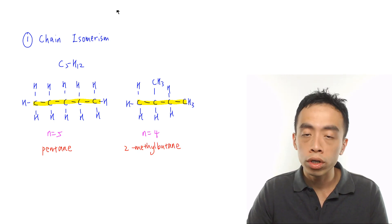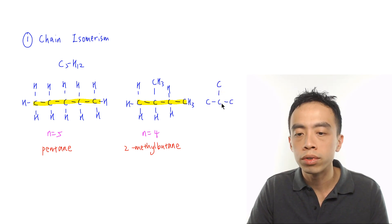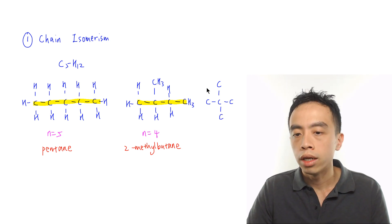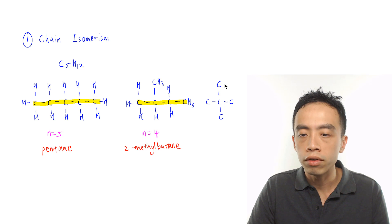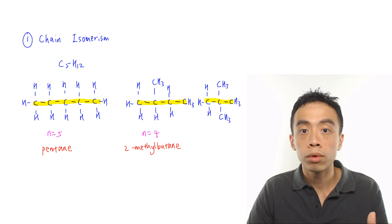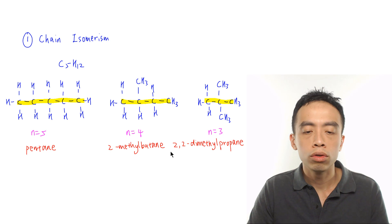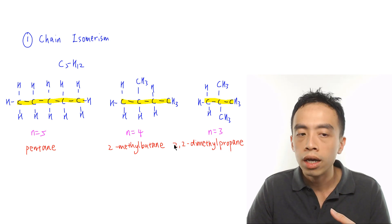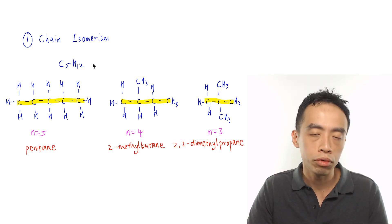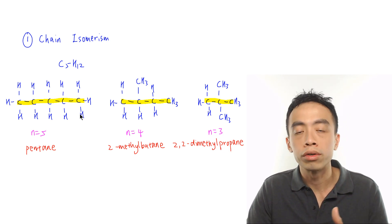We can draw one more chain isomer where the longest possible carbon chain is n = 3, with two methyl groups on carbon 2. Filling in the hydrogens gives four CH3 groups around carbon 2, and the longest carbon chain is n = 3. The name for this compound is 2,2-dimethylpropane. These three compounds are obviously different — they have different structural formulas and different names — but they happen to have the same number of carbons and hydrogens. Because the difference is based on how the carbon chain is branched, they are considered chain isomers.